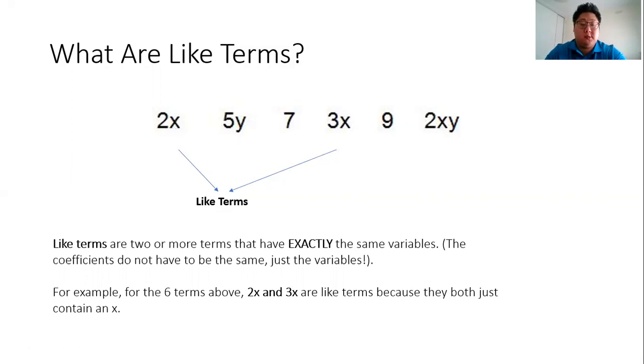Like terms are two or more terms that have exactly the same variables. The variables are what we also call letters. The coefficients, which are the big numbers at the front, do not have to be the same value, just the variables or the letters. For example, 2x and 3x are like terms.